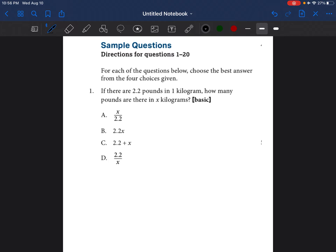So it says if there are 2.2 pounds in one kilogram, how many pounds are there in X kilograms? Because I'm seeing two different units of measurement, I'm assuming this is going to be a proportion. A proportion just means two fractions that are set equal to one another.